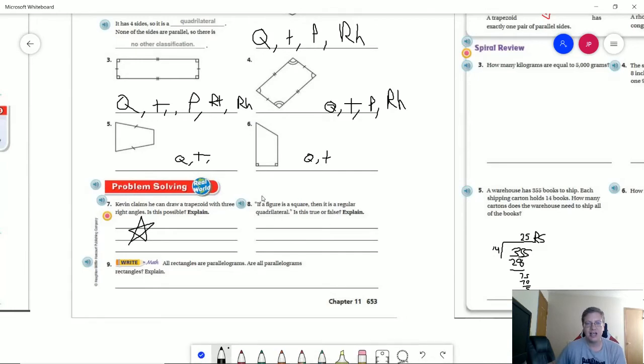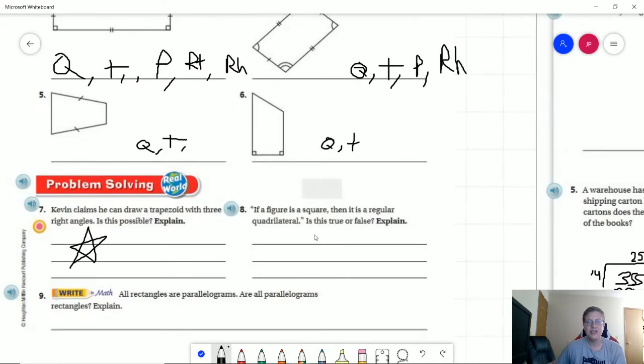So number eight if a figure is a square then it is a regular quadrilateral. Is this true or false? It is true because a square is going to have four matching angles and four sides that are all the same length. So four angles and four matching sides for that. So that would make this true.